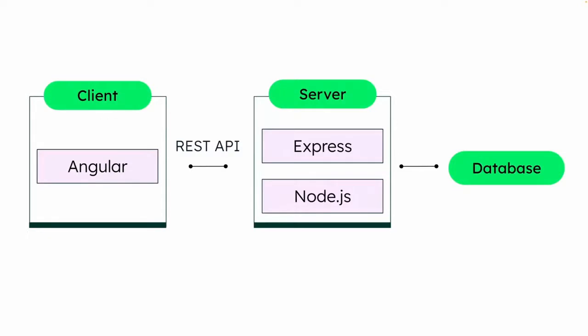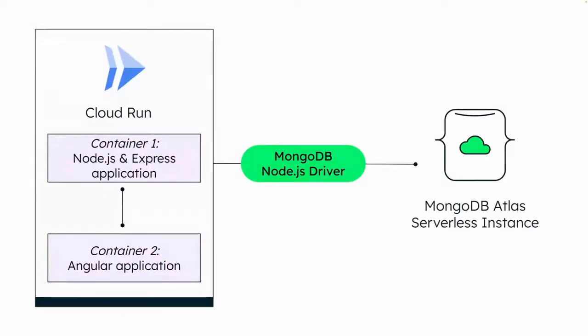To make our application truly serverless, we'll combine MongoDB Atlas and Cloud Run using the MEAN stack: MongoDB for data storage, Express.js as a Node.js web framework for building APIs, Angular as the client-side JavaScript platform, and Node.js as the server-side runtime. The architecture has a client layer — the Angular application — using REST APIs to send requests and receive responses from the Express/Node server, which connects to the database. The client and server applications are in two different containers deployed in Cloud Run, using a MongoDB Node.js driver to connect to the MongoDB Atlas serverless instance.